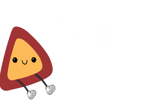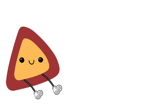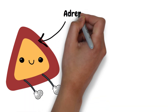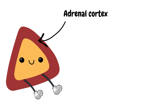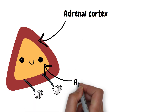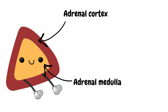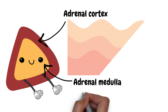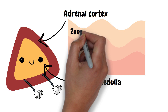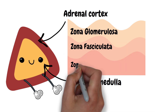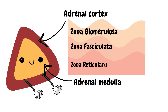The adrenal gland is made of two main parts. The outer region is called the adrenal cortex, and the inner part is called the adrenal medulla. The cortex can be subdivided into three additional zones called the zona glomerulosa, zona fasciculata, and zona reticularis, each layer producing different hormones.